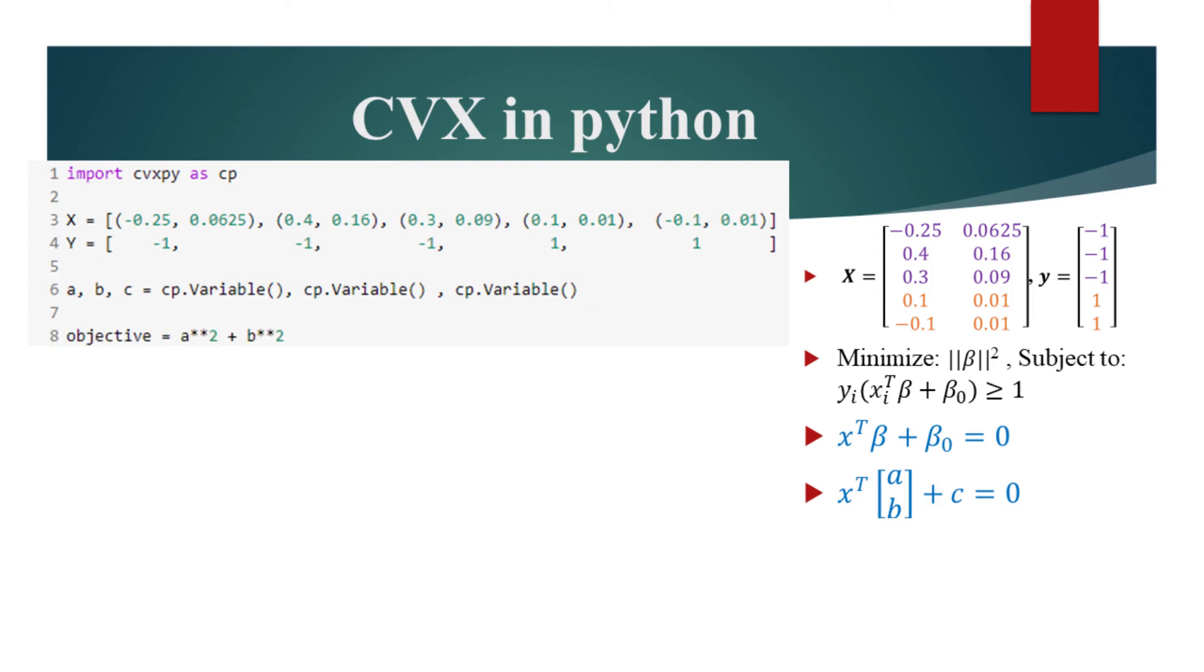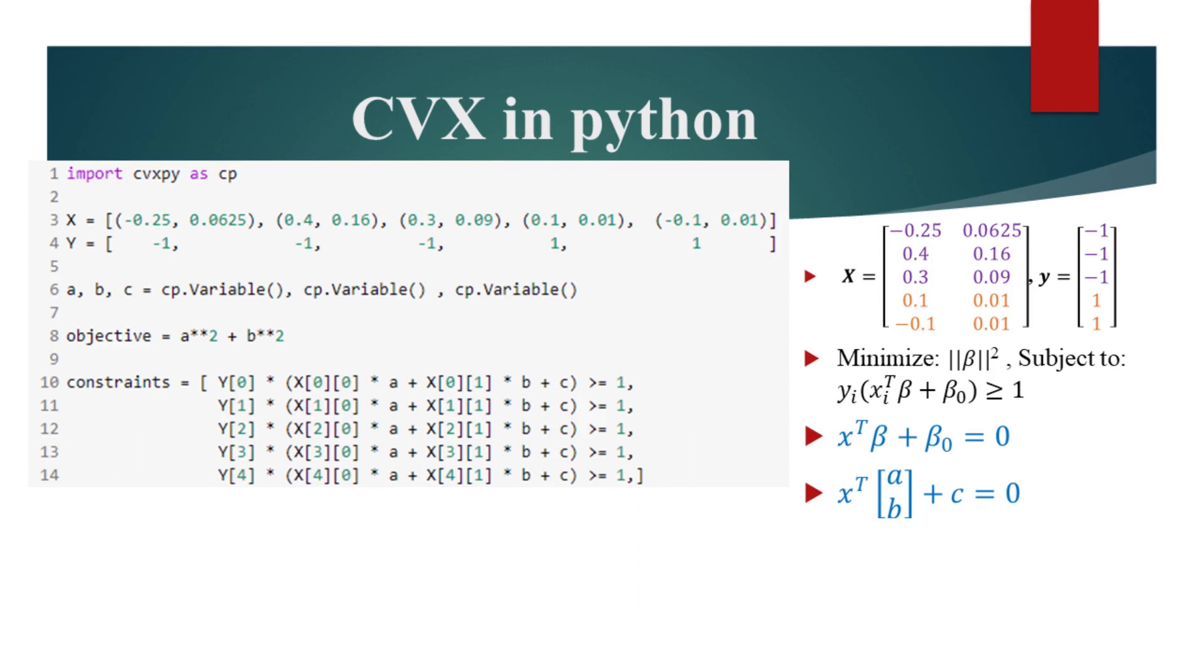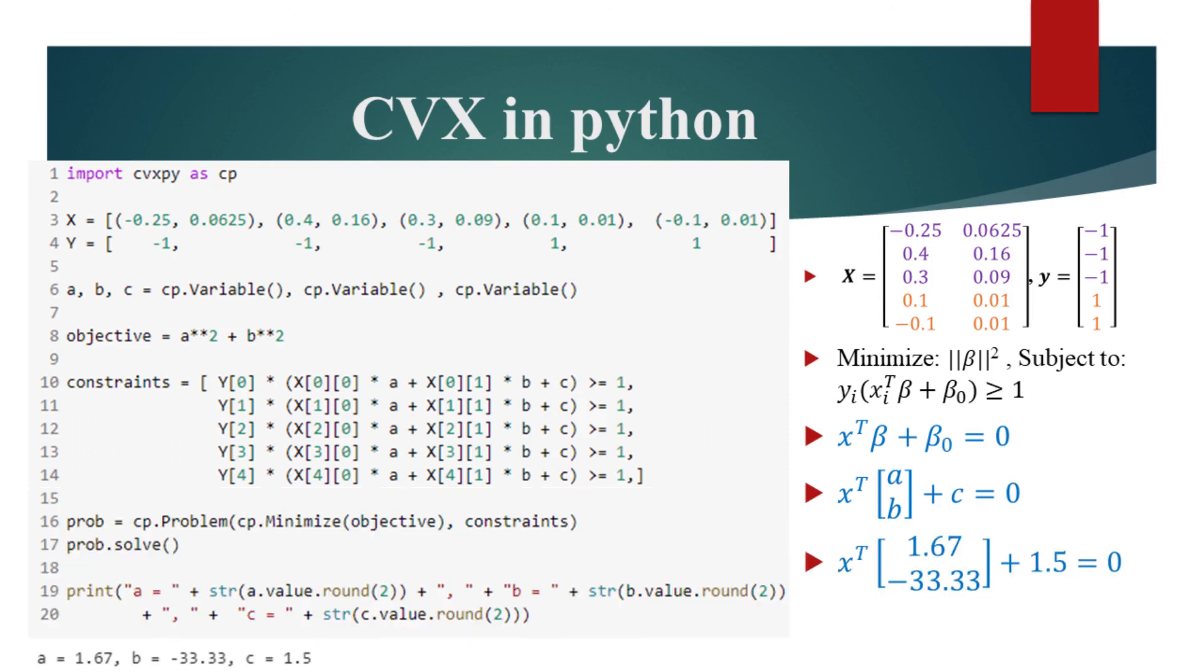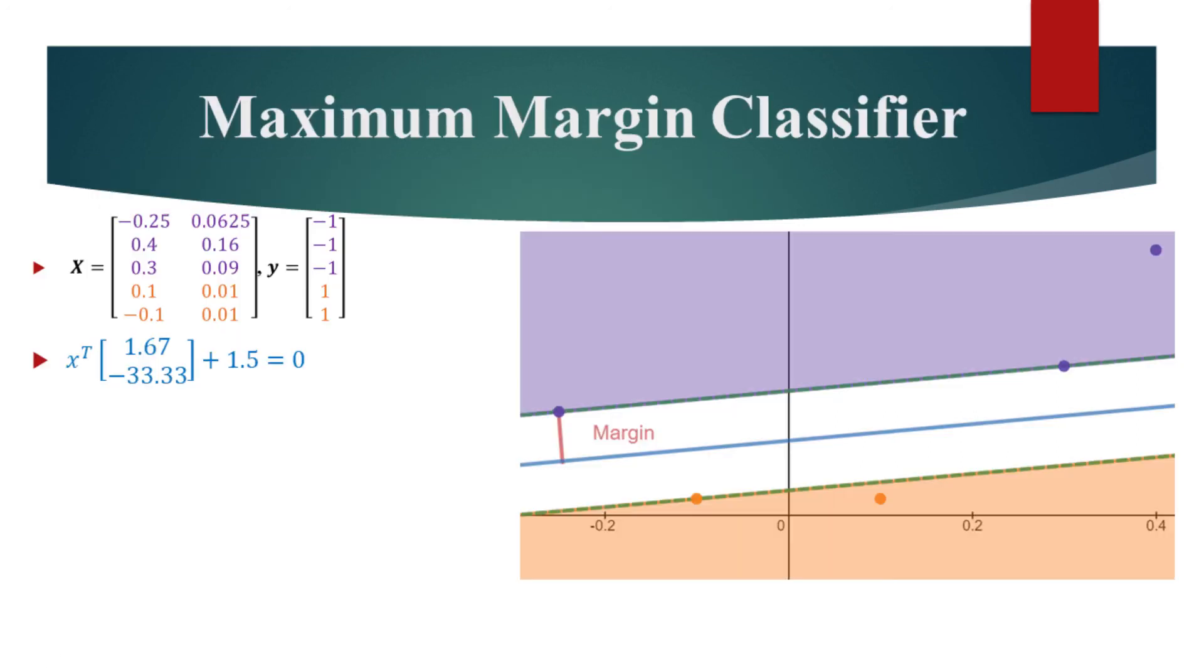Then, we define an objective function to minimize. In our case, that would be the squared Euclidean norm of beta, or A squared plus B squared. Then, we define the inequality constraints according to the problem. We now feed this problem to CVXPy and get the values for the variables. If we now plot this decision boundary with these values, we will get a hyperplane that best separates the two classes. A maximum margin classifier.